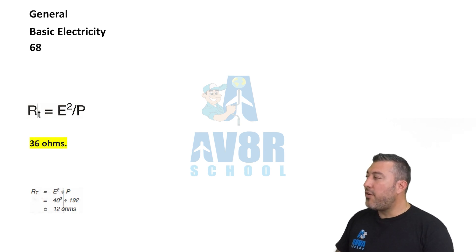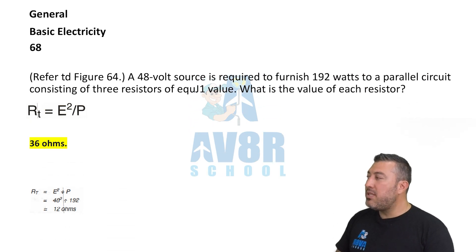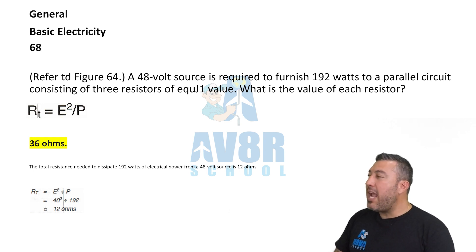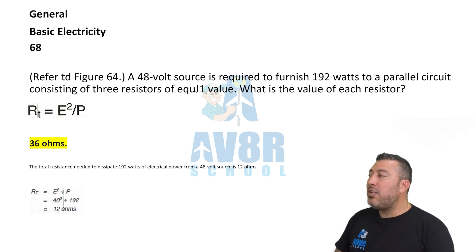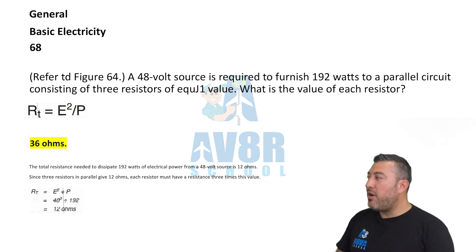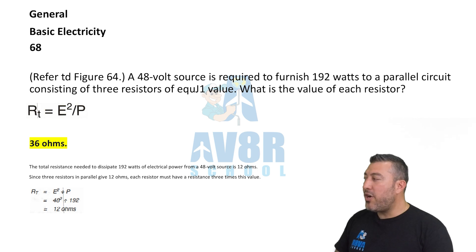68: Here's your formula — they're looking for 36 ohms. Refer to figure 64. A 48-volt source is required to furnish 192 watts to a parallel circuit consisting of three resistors of equal value. What is the value of each resistor? 36 ohms.